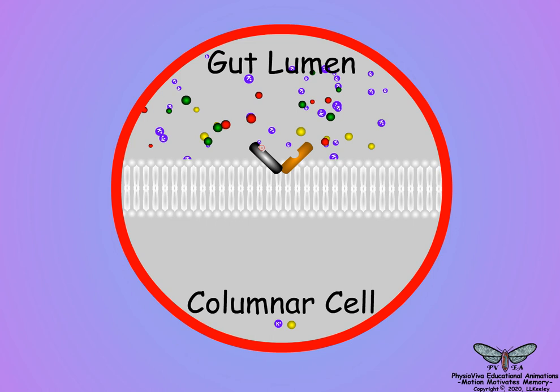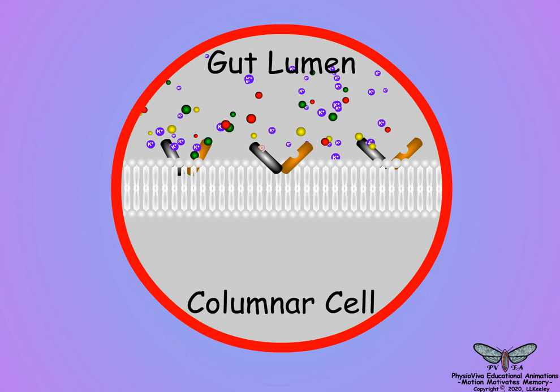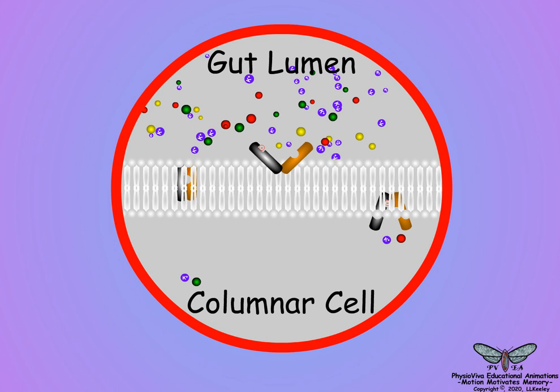Different amino acid transporter proteins are present in various regions of the midgut, and amino acids enter the hemolymph at different times and in differing amounts, possibly due to their metabolism by the midgut cells.